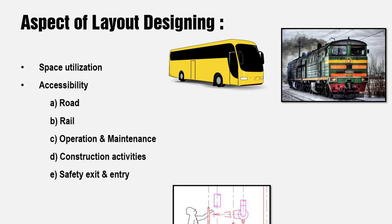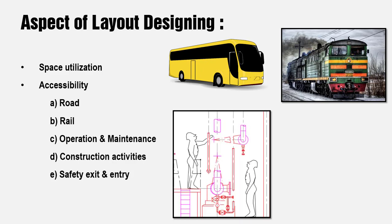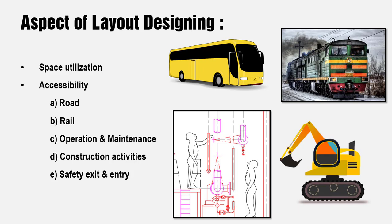The third point is operation and maintenance — to operate valves, operate pumps, or remove equipment. There are lots of operation and maintenance requirements that need to be addressed while designing the layout. Also for construction activity — to install and remove equipment and to install piping — construction needs material storage space. There are so many such things considered while planning a layout. And very importantly, safety exit and entry: during a fire, personnel must have a provision to reach the assembly area and stay away from the fire.